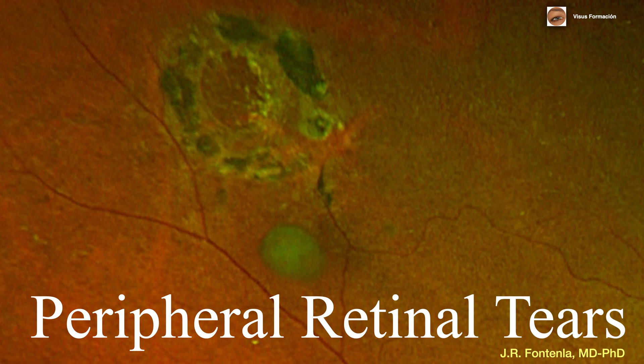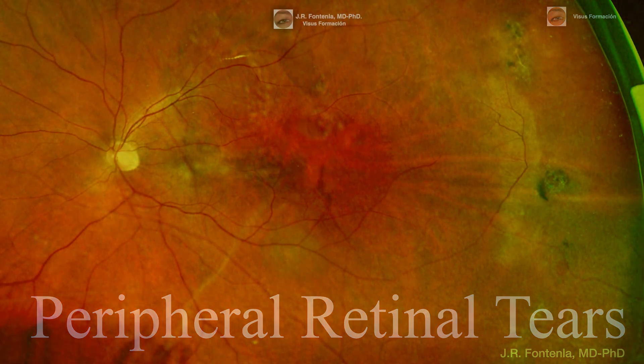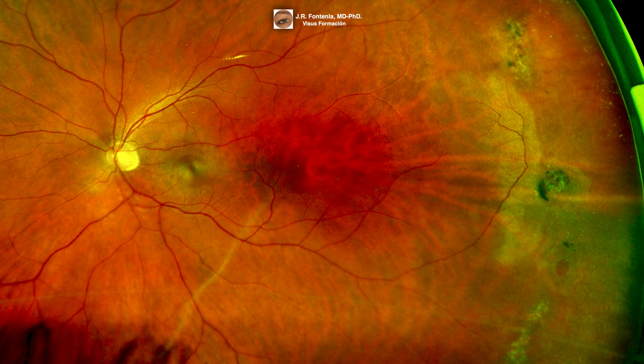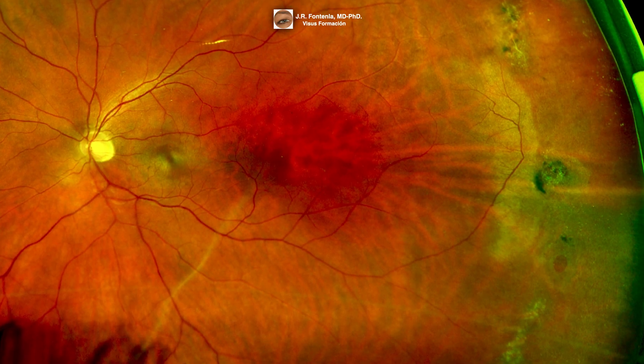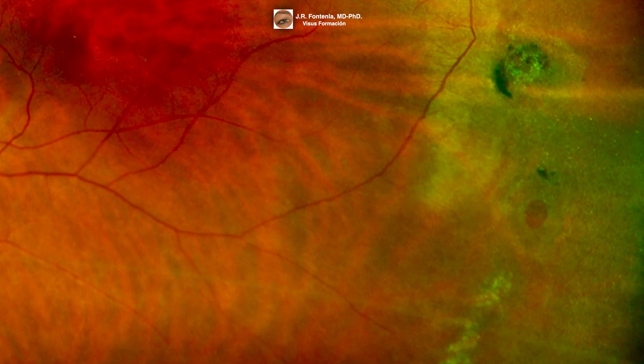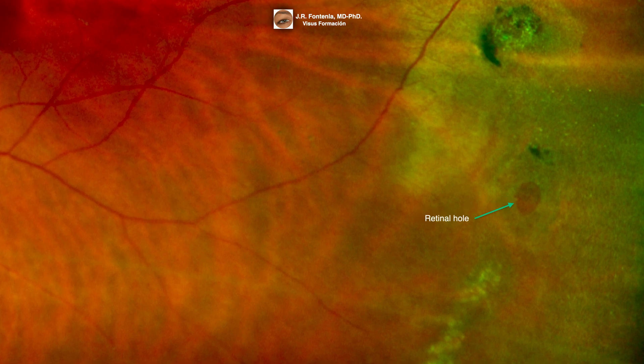In this video, we are going to talk about peripheral retinal tears. Pointed by the arrow, we can see a peripheral retinal hole.